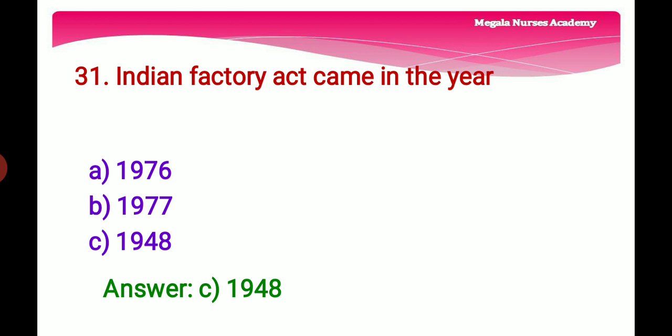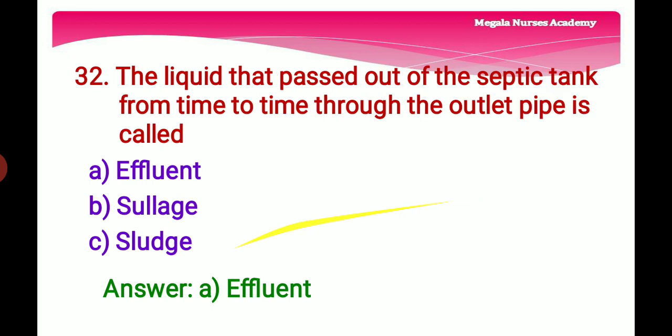Thirty-second question: The liquid that passes out of the septic tank from time to time through the outlet pipe is called — Option A: Effluent, a waste discharge into the surface. Option B: Sullage, wastewater from household sinks, showers, and baths but not toilet waste. Option C: Sludge, a precipitated solid matter produced by water and sewage treatment. The right answer is Option A, effluent.